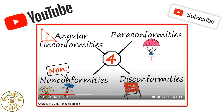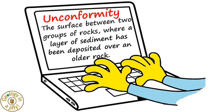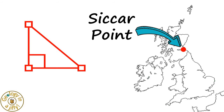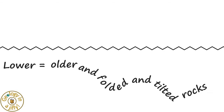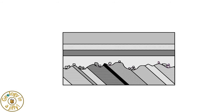What is an Unconformity? If you have seen the Geology in a Jiffy film about the different types of Unconformities, you will know that in Geology, an Unconformity is the surface or contact between two groups of rocks, generally where a layer of sediment has been deposited over an older eroded pre-existing rock. The Unconformity Hutton identified at Siccar Point is an Angular Unconformity — the old erosional surface across an ancient deformed surface, upon which younger and often different rocks were laid.